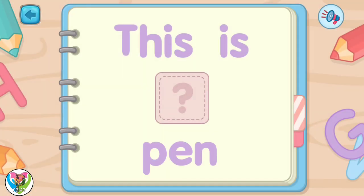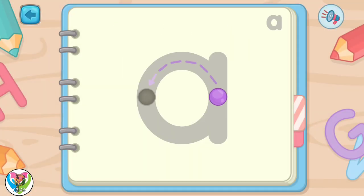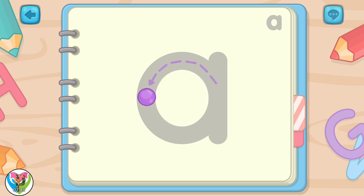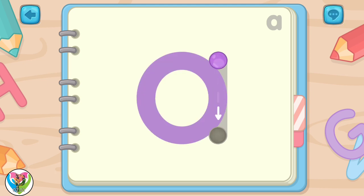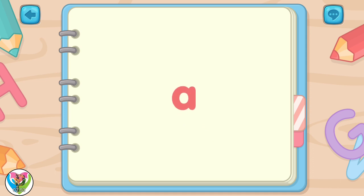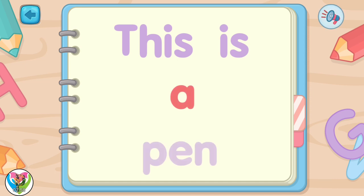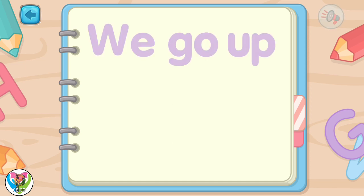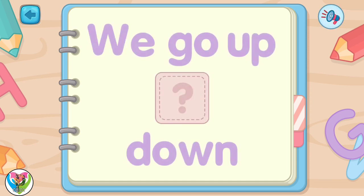Let's try to write some sight words. Move the drop to trace the letter A. This is how the sight word A is written. This is a pen.